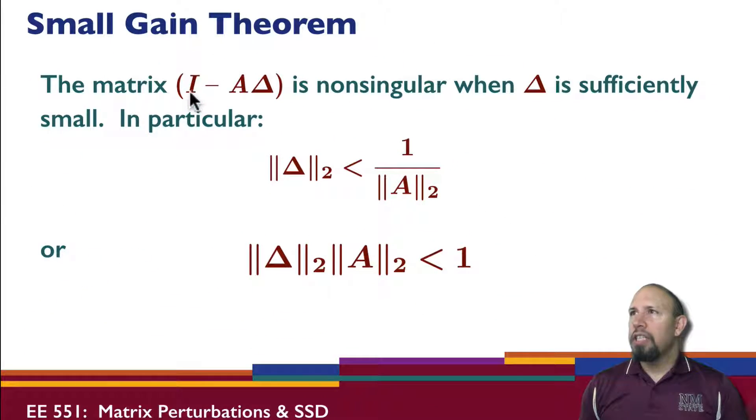The small gain theorem says that the matrix I minus A delta is non-singular when delta is sufficiently small. In particular, if the norm of delta is less than one over the norm of A. Or, if this product is true. This is often referred to as the small gain theorem. We're going to come back later and see this same kind of approach applies to systems.